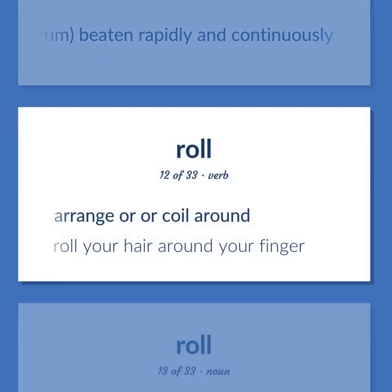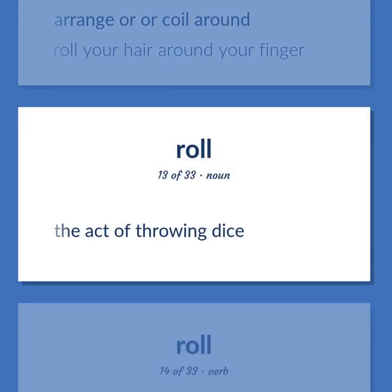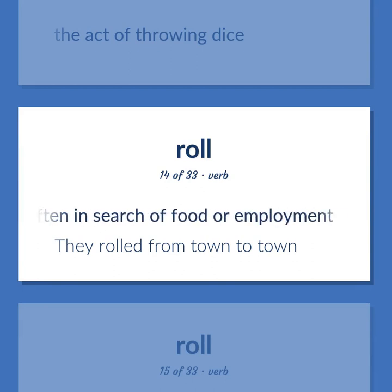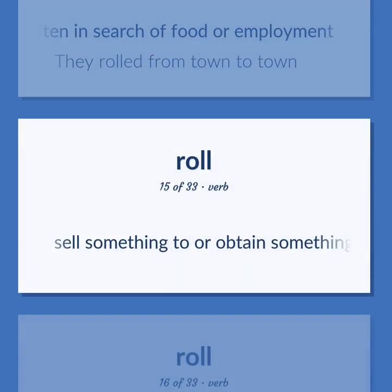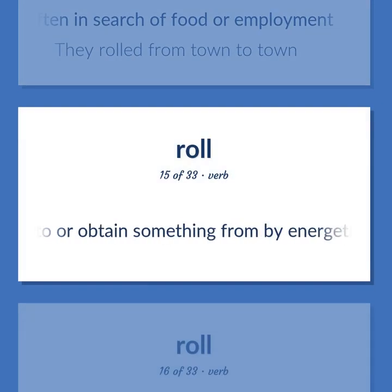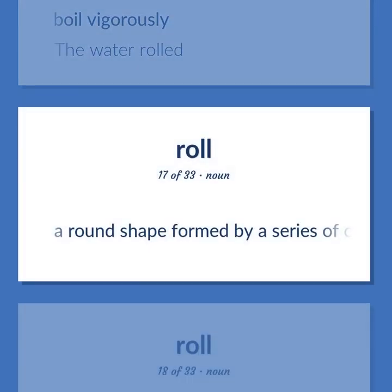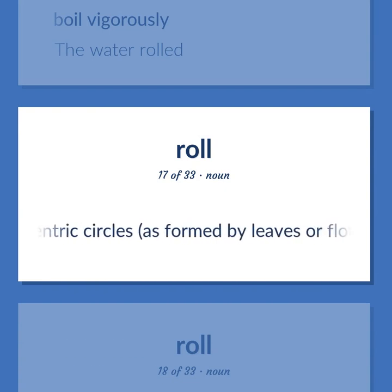Arrange or coil around — 'Roll your hair around your finger.' The act of throwing dice. Move about aimlessly or without any destination, often in search of food or employment — 'They rolled from town to town.' Sell something to or obtain something from by energetic and especially underhanded activity. Boil vigorously — 'The water rolled.' A round shape formed by a series of concentric circles, as formed by leaves or flower petals.